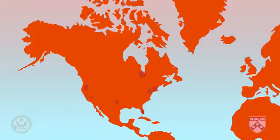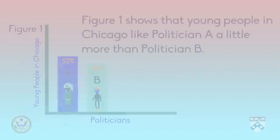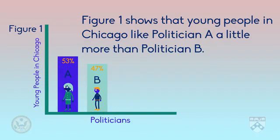Do we have data from all people? No, just young people — so we need to add that. Do we have data from all cities? No, only from Chicago — so we need to add that. Was there a big difference in preference for A over B? No, only a little difference — so we add that. So now our claim is this: 'Figure one shows that young people in Chicago like politician A a little more than politician B.' Now we have moderated our claim, and it is an accurate commentary on the data.